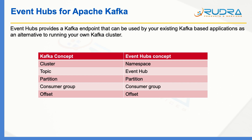Comparing Kafka concepts with Event Hubs concepts: in Event Hub you call it a namespace, while in Kafka you call it a cluster. Within the namespace you configure multiple event hubs; similarly within a Kafka cluster you configure multiple topics. So a topic in Kafka maps to an event hub in Event Hubs. Partitions, consumer groups, and offset are the same in terms of terminology. So your applications depending on a Kafka cluster don't need to change anything apart from simply changing the endpoints.